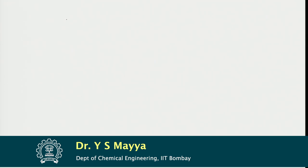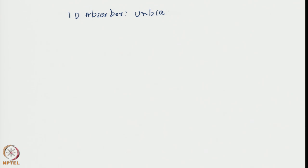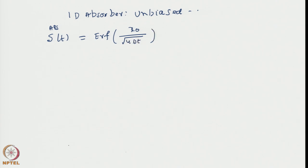We showed that the survival probability of the random walker in the presence of an absorber — 1D absorber, unbiased case — the survival probability S(t) in the presence of an absorber is equal to the error function of x₀ divided by √(4Dt). As t tends to infinity, since the error function of argument 0 tends to 0, S(t) tends to 0.